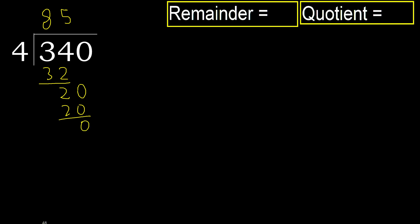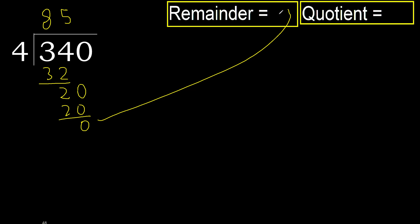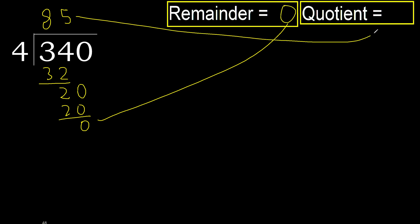There are no more digits, therefore finish it. 340 divided by 4 is 85.